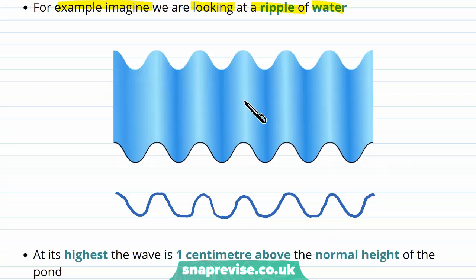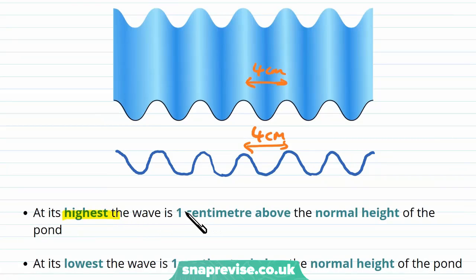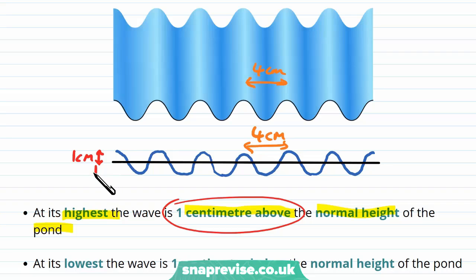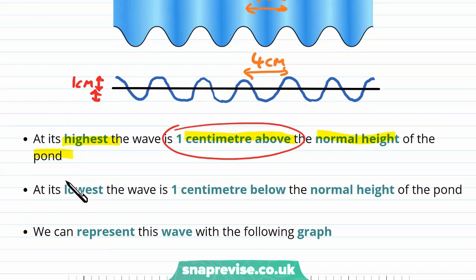Let's imagine that the distance between the top of any two of these waves is 4cm. Let's also imagine that at its highest the wave is 1cm above the normal height of the pond. So this distance here is 1cm, and of course this distance here would also be 1cm. At its lowest, the wave is 1cm below the normal height of the pond. We've managed to use some numbers to describe our wave.